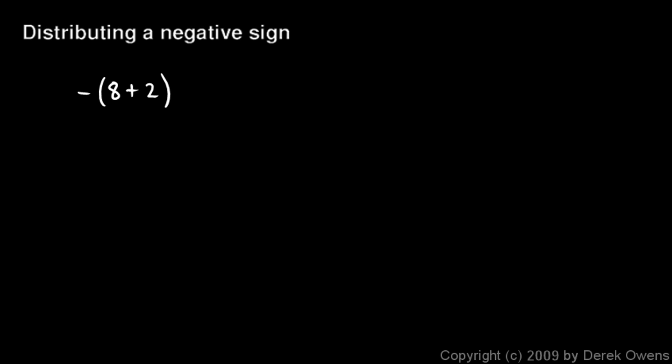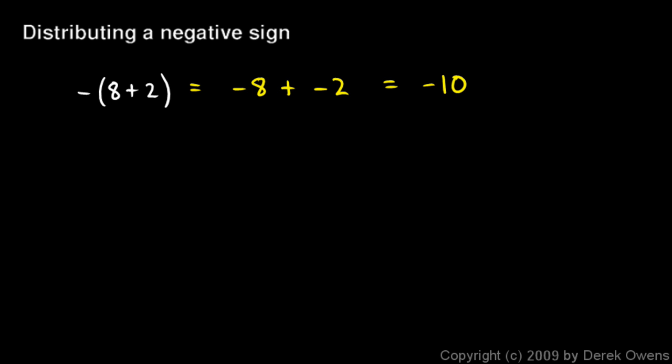Now we'll talk about distributing a negative sign. This negative sign here is applied to this whole group, the 8 plus 2 in parentheses. And if a negative sign is applied to a group, then we can distribute the negative sign — you can apply the negative sign to each term in the group. So the negative sign attaches itself to the 8 and to the 2. So this becomes negative 8 plus negative 2, and we know that's going to be negative 10.